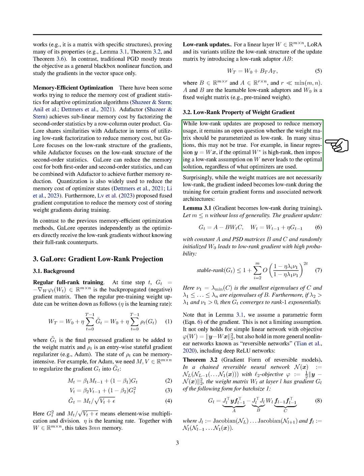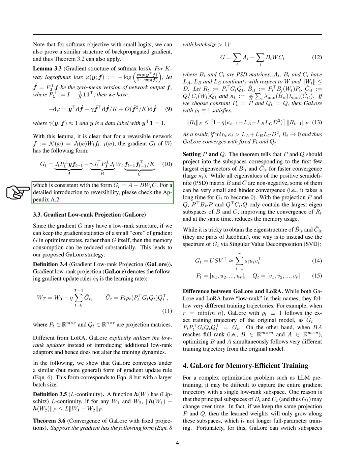While low-rank updates aim to reduce memory usage, it is still uncertain whether weight matrices should be parameterized as low-rank. In certain cases, such as linear regression, imposing a low-rank assumption on weight matrices may not lead to the optimal solution. Surprisingly, even when weight matrices are not inherently low-rank, gradients can become low-rank during training for specific gradient forms and network architectures.